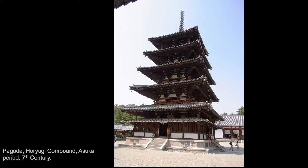The five-story pagoda from the compound is an impressive 122 feet tall, though it was made more for appearance than practicality. It appears to be five stories, but you can only enter the bottom one or two; above that is empty space. The pagoda was not meant for people to meet inside anyway — it is more of a reliquary, a place to keep special relics related to religious beliefs, so it makes sense that they wanted it to be impressive rather than practical.